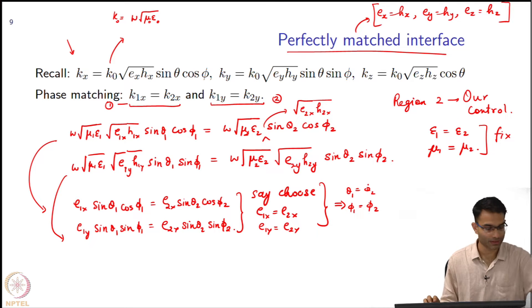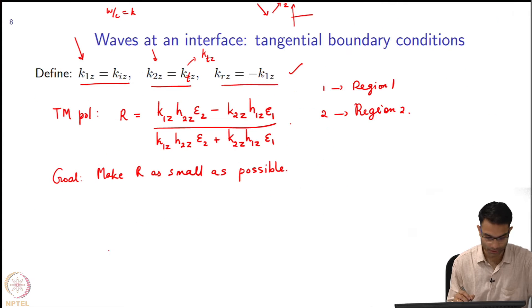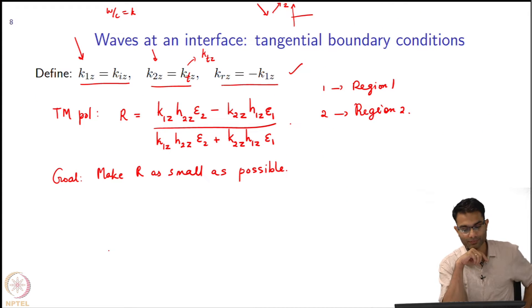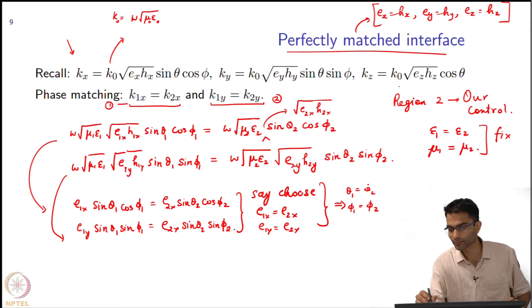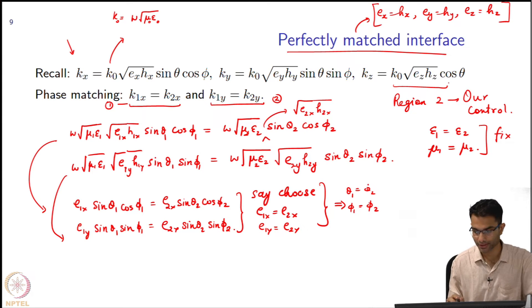Now the final thing that is left is to look at the reflection coefficient. What does this reflection coefficient look like? k1z is there and h2z is there, k2z is there and h1z is there, epsilon1 equals epsilon2 so forget it. Let us just look at the numerator. Now k1z, what was k1z here? k1z has this expression over here.